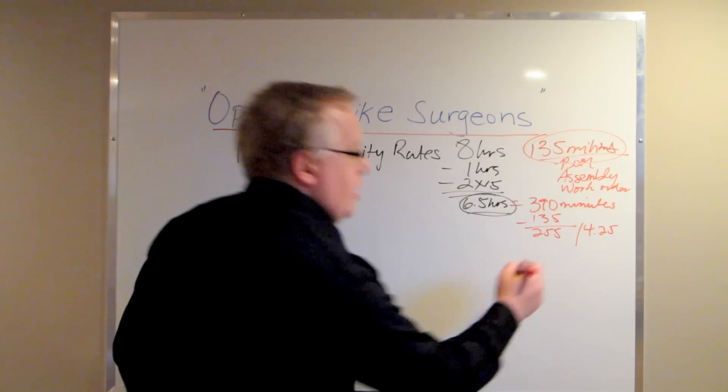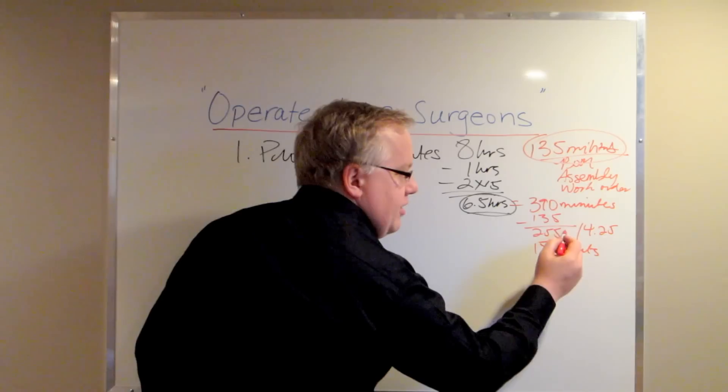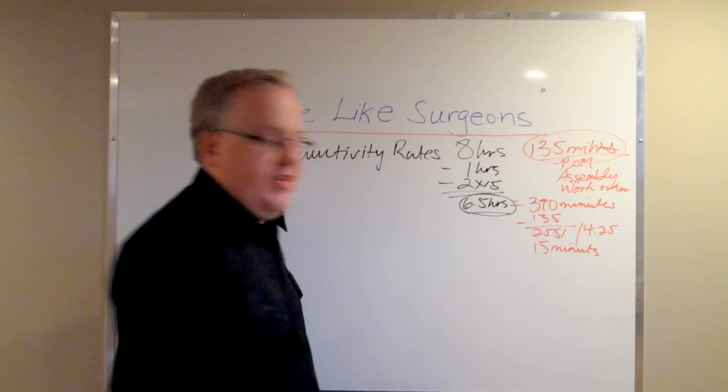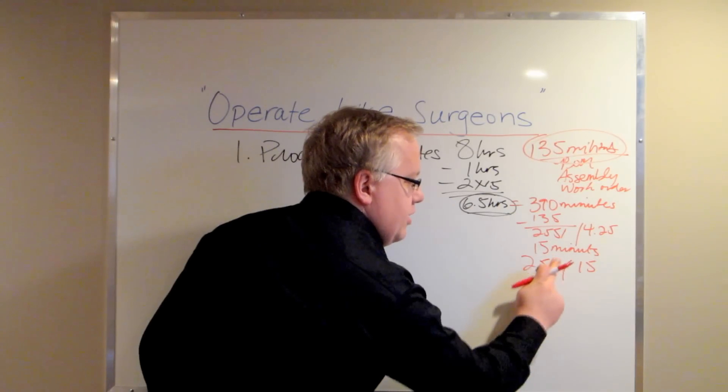This particular product had a cycle time of 15 minutes. And if you take this 255 and divide it by this 15, so 255 divided by 15,